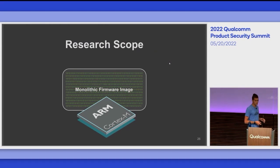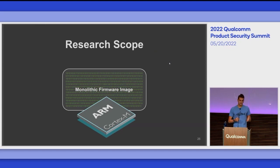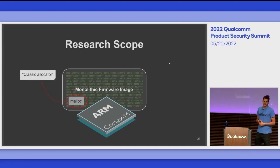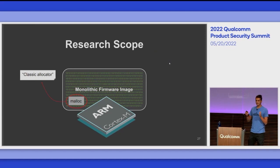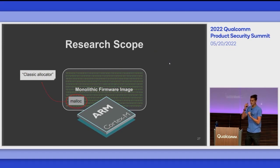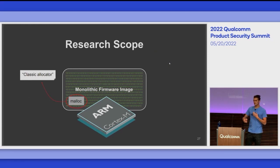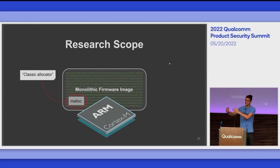To define our research scope — since firmware is too broad a domain — we focus on monolithic firmware images for Cortex-M CPUs, one of the most widespread architectures for IoT devices. We look for firmware using classic dynamic allocators: the type where you ask for a specific size, size is a parameter of malloc, it returns the allocated address in a register (R0 in ARM), and at some point there's the opportunity to reallocate freed chunks. This is our research scope.